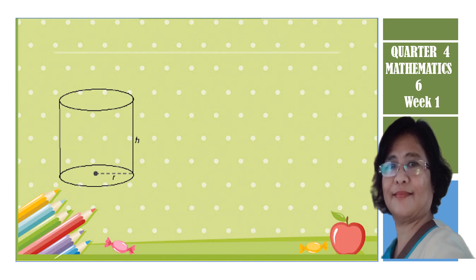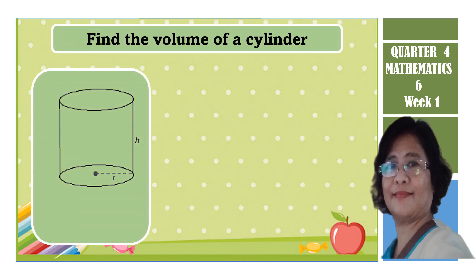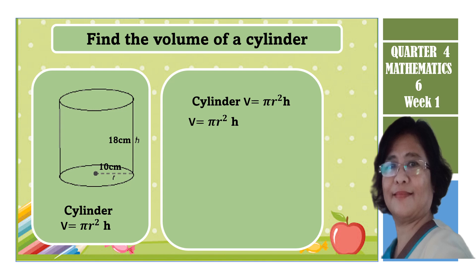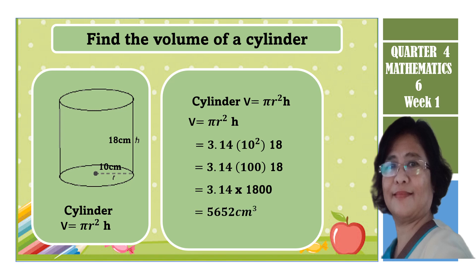Finding the volume of the cylinder: the formula is Volume = π × r² × height. The height is 18 centimeters and the radius is 10 centimeters. Using the GEMDAS rule, start with the exponent: 10 squared equals 100, times 18 gives 1,800, times 3.14 gives the final answer of 5,652 cm cubed.